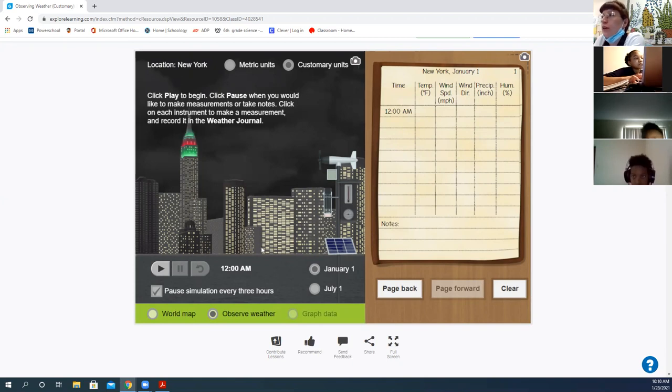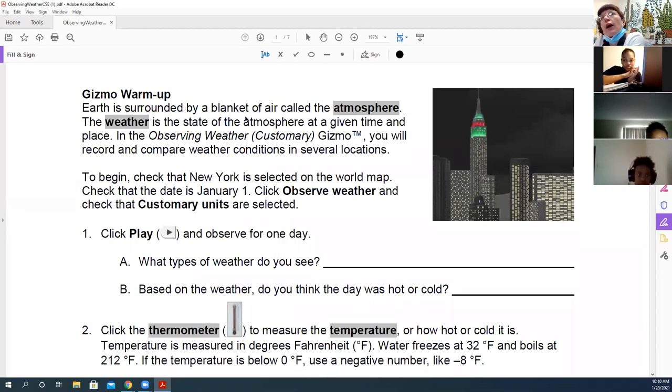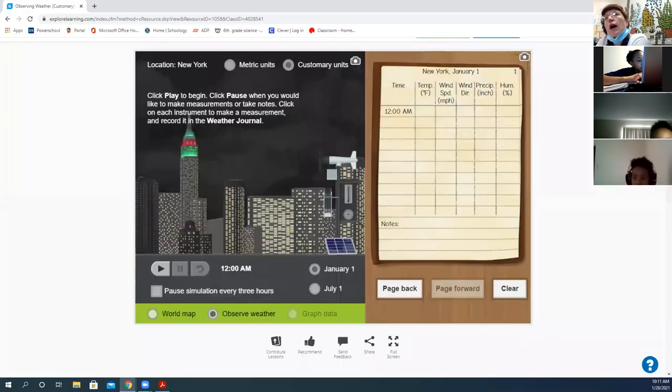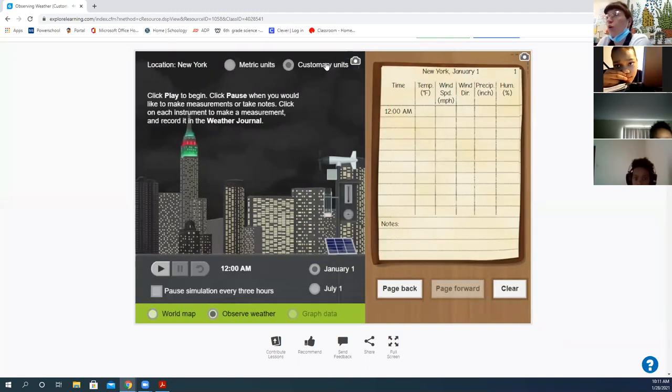So it'll go from 12 to 3 to 6 to 9 to 12 again, right? All right. So I'm going to go ahead just really quick. We're going to do the warmup together. And it says, Earth is surrounded by a blanket of air called the atmosphere. The weather is the state of the atmosphere at a given time and place. In the observing weather gizmo, you will record and compare weather conditions in several locations. To begin, check that New York is selected on the world map. Check that the date is January 1st, and click observe weather and check that customary units are selected. So let's just double check that that's all the settings that we have. I see that I'm, if I go back to world map, I'm in New York, it's January 1st, and I'm going to select observe weather. And I'm under customary units. So that'll be your default setting.